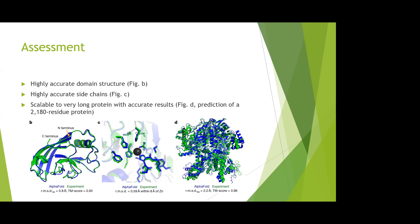From figure E, it can predict very long proteins with more than 2000 residues. The green structure is the ground truth and the blue is the predicted structure.